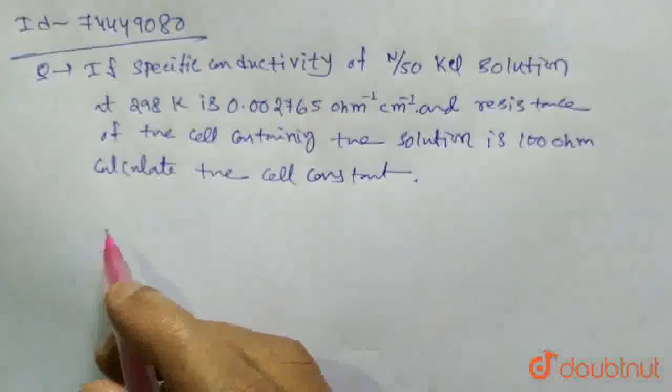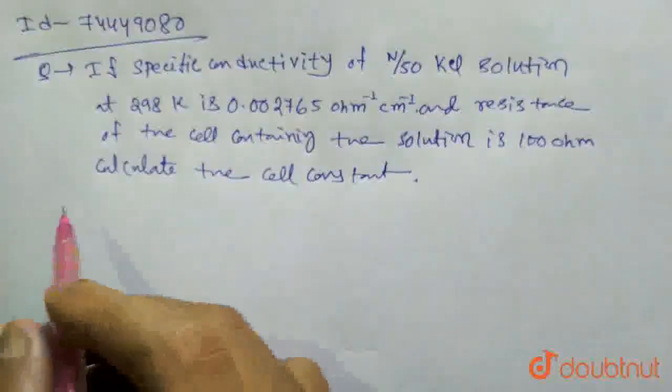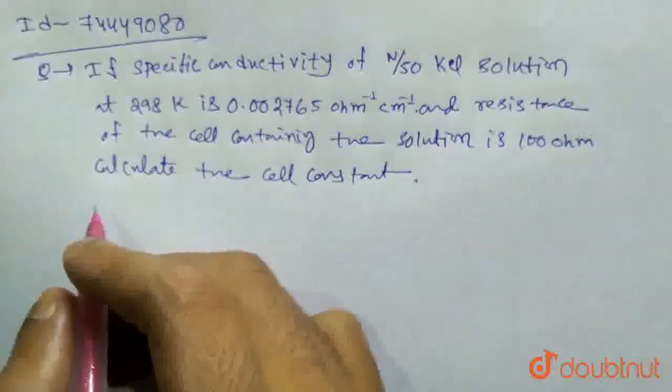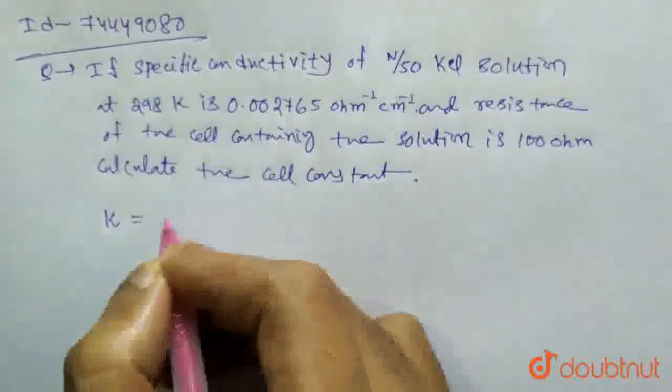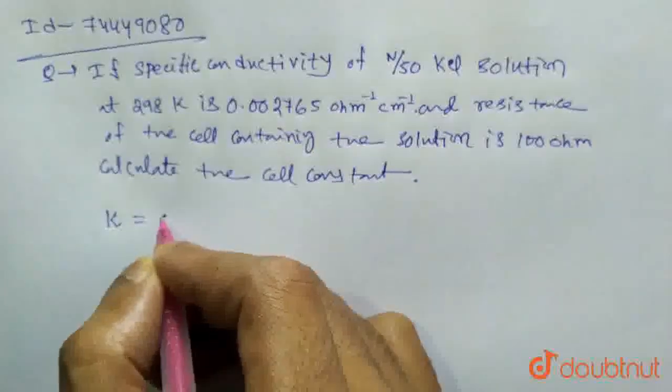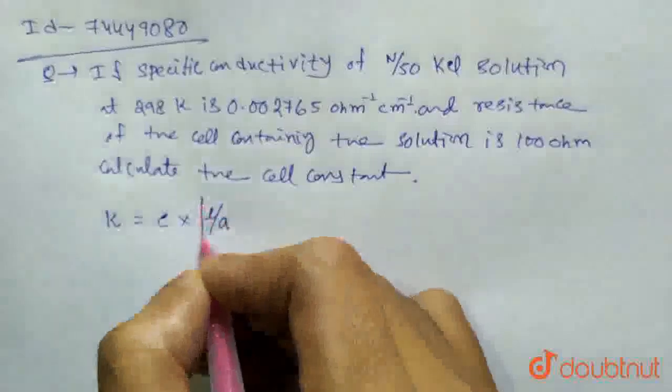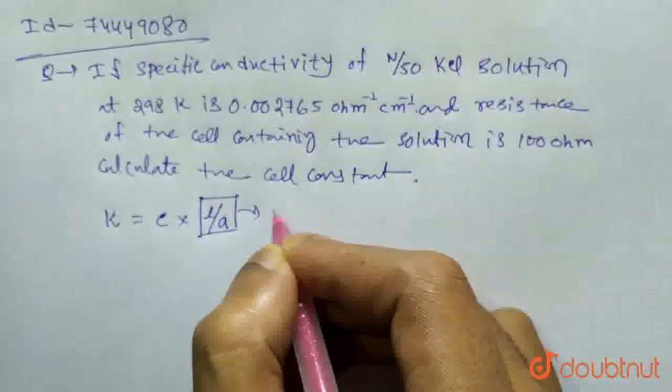To solve this question, we use the formula: kappa equals conductance C times L by A. Here, L by A is the cell constant.